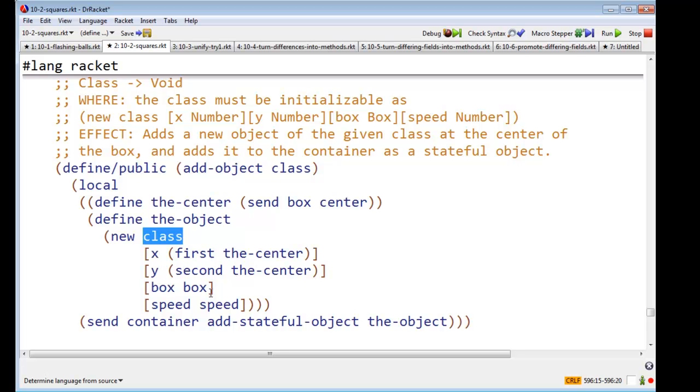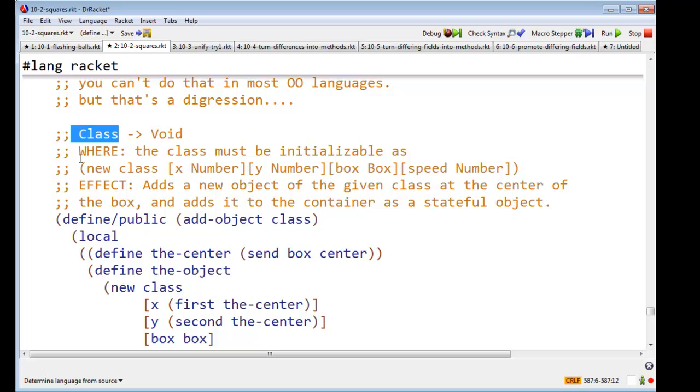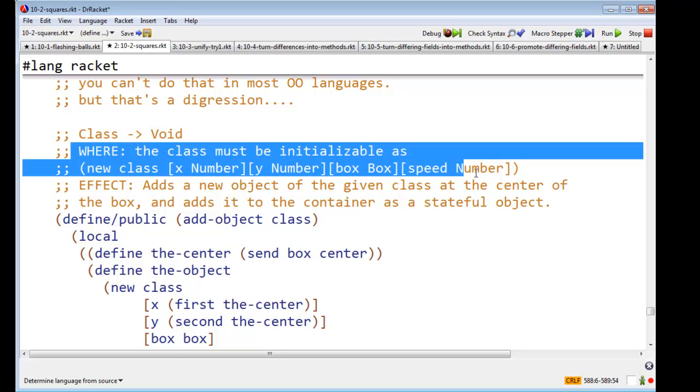So I can say add-object-class. And so I just say new class, x first the center, y second the center, b box, speed speed. Now there are two things to notice here. First of all, not every class is an appropriate argument to this function. So I'm going to put in an invariant here, a where clause that says, the class must be initializable via new class, x number, y number, b box, box, speed number.